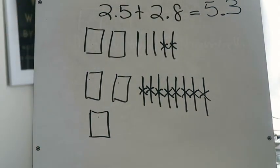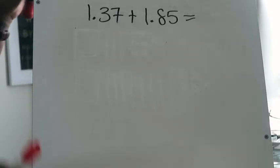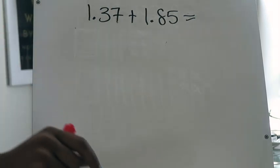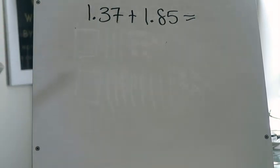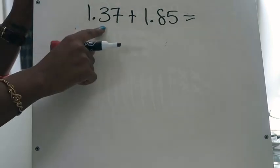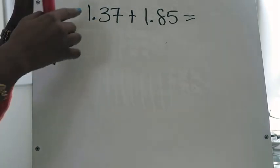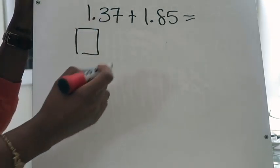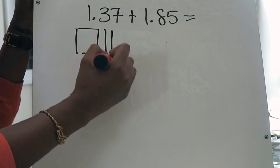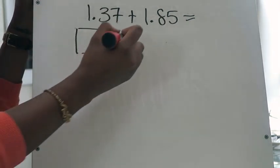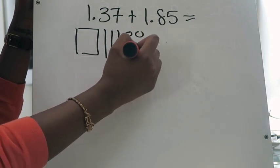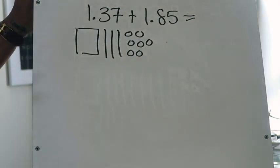So that's our first example. In just a second I'm going to give you the second one. We are going to be adding one and 37 hundredths plus one and 85 hundredths. The first thing I'm going to do is model my first addend, one and 37 hundredths. I have one whole, so I will draw one whole. I have three tenths, so I will model one, two, three tenths. And I have seven hundredths, so I'm going to model one, two, three, four, five, six, seven hundredths. And I'm done with that.